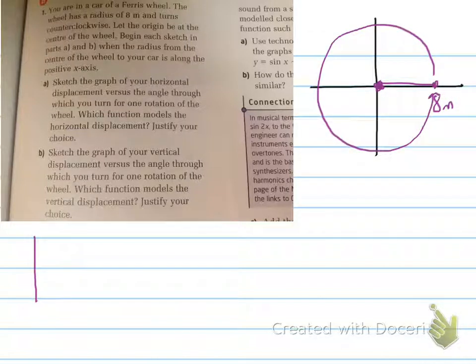What we're going to do is determine the information in this question. You're in the car on a Ferris wheel. The wheel has a radius of 8 meters and turns counterclockwise. Let the origin be at the center of the wheel.